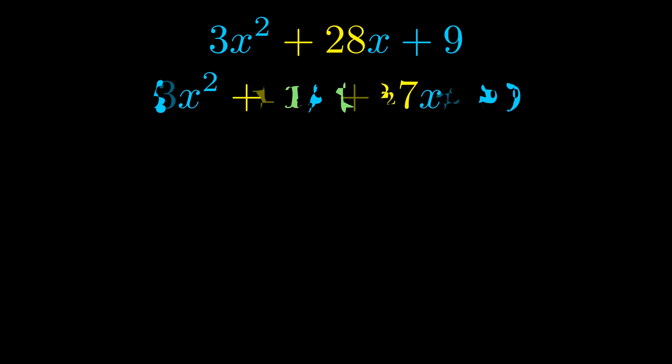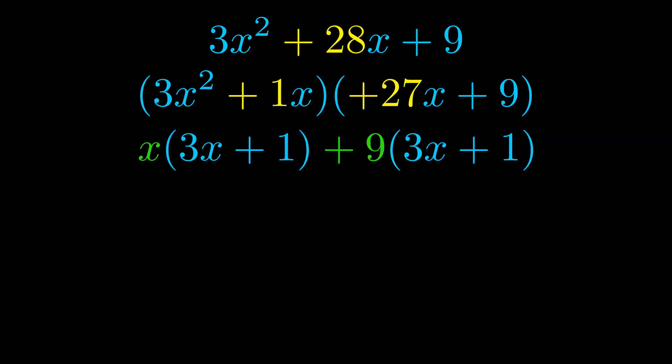Once we've done this we go ahead and we put parentheses around the first term and the last term. And we do that so that we can take the greatest common factor out of both terms. We can see the greatest common factor is now outside in green.